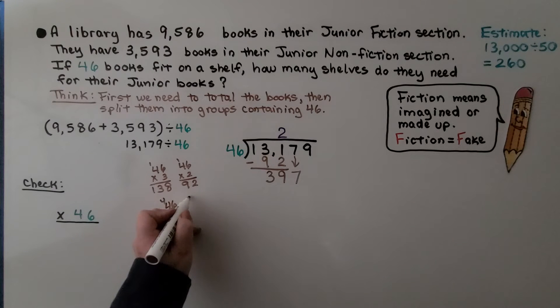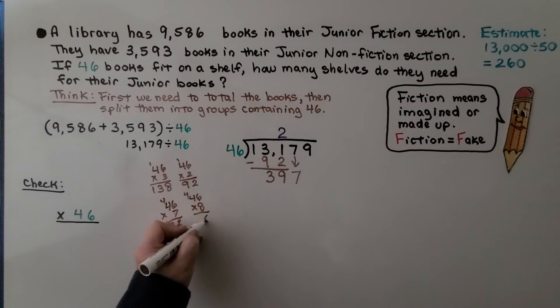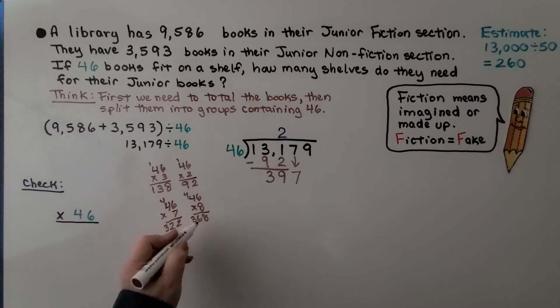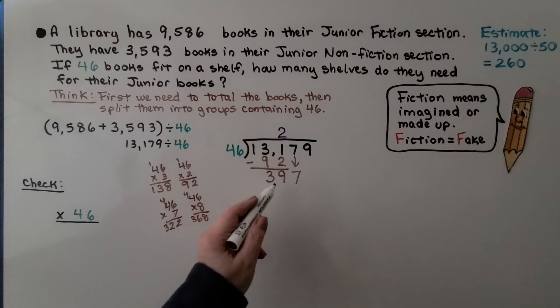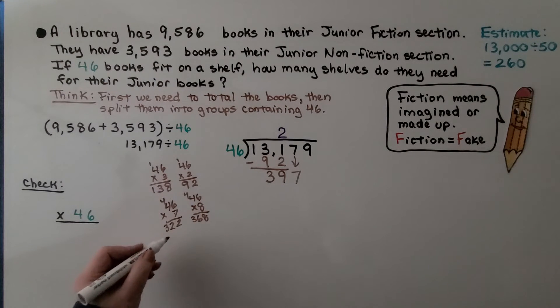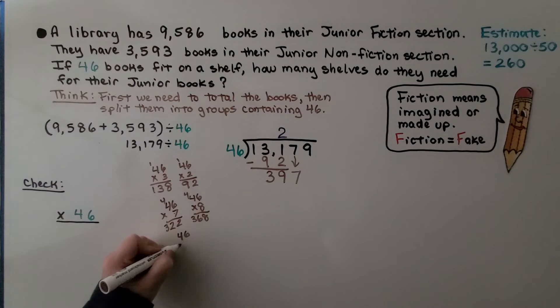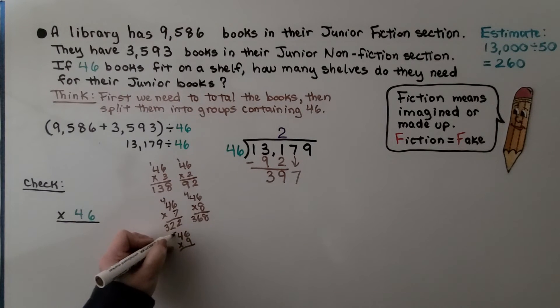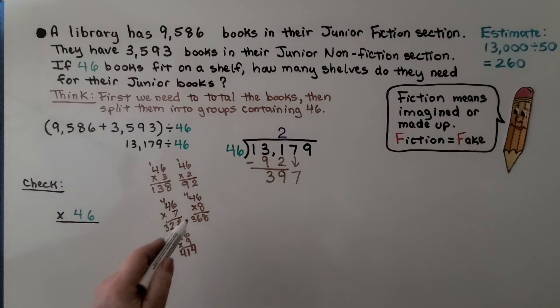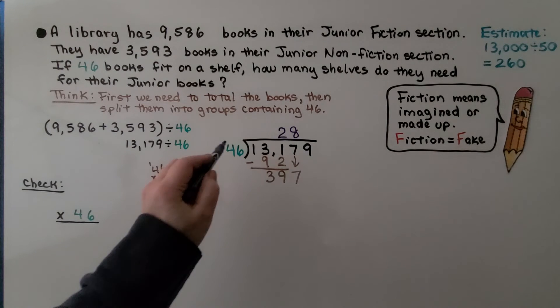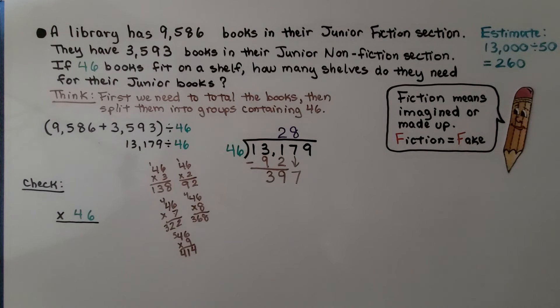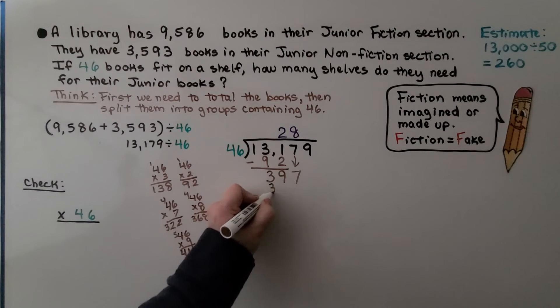I think we could get another 46 in there because we have 397. Let's try 46 times 8. 8 times 6 is 48. 8 times 4 is 32 and 4 more is 36. 368. I don't think we can get another 46 in there. We can try 46 times 9. That's 54. That's 36. And 5 is 41. 414. That is too much. So we're going to have to go with the 8 as the next part of the quotient. And now we know that 46 times 8 is 368. We're going to subtract that.